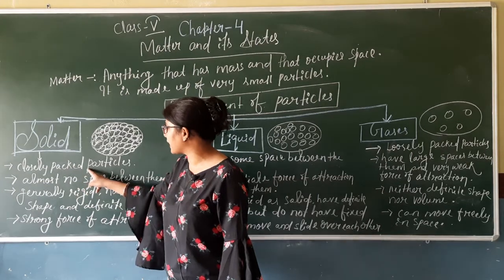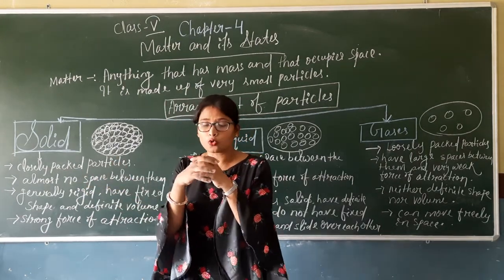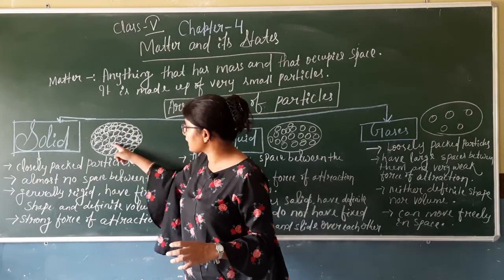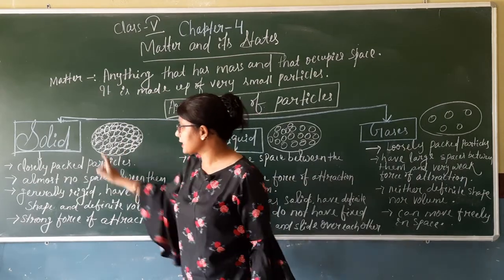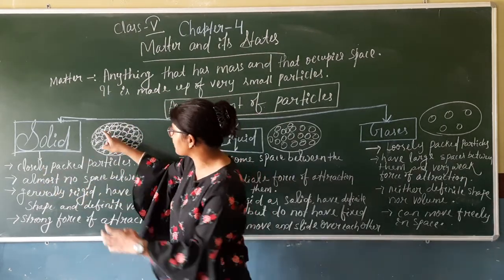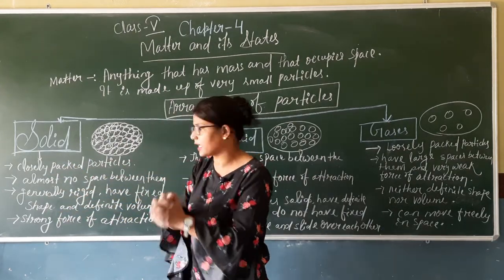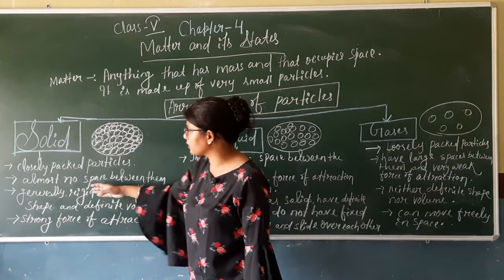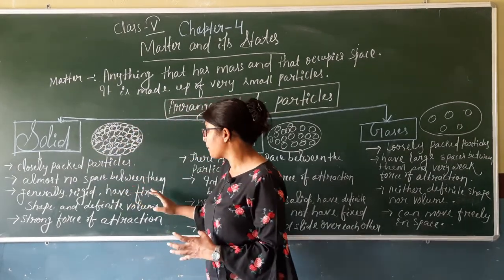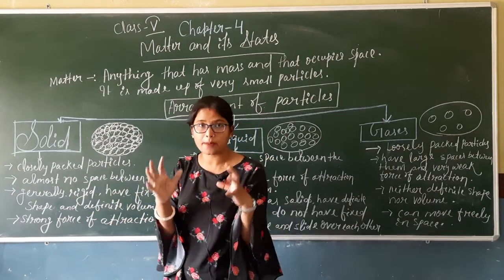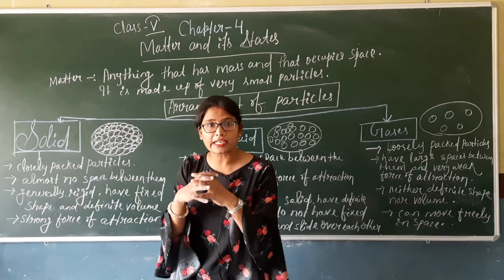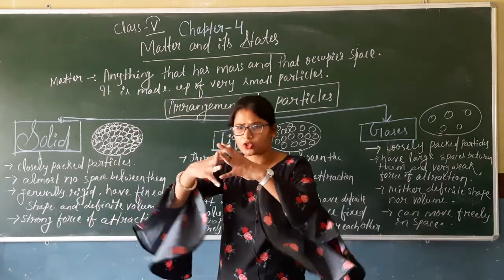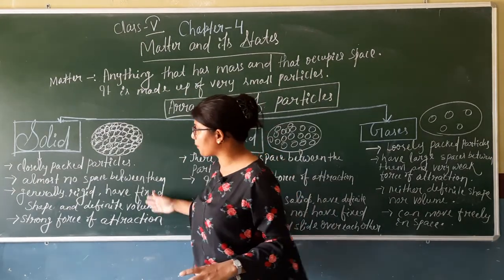Number one: solids have closely packed particles. Solid particles are very closely packed — it is a rigid body with a fixed structure. As you can see in the diagram, they are fully closely packed with almost no space between them — there is no gap. Solids have a definite shape and definite volume; the shape is fixed. They also have a strong force of attraction between particles. These are the properties of solid.